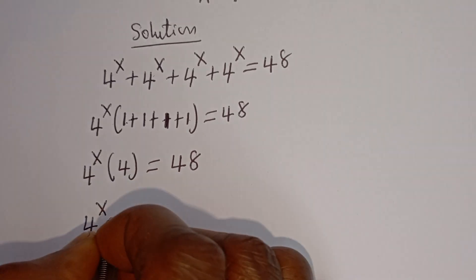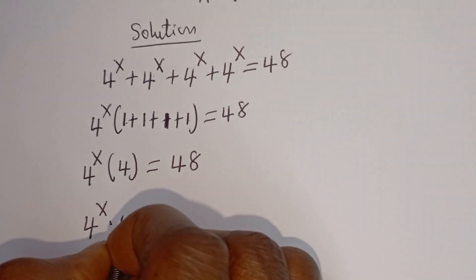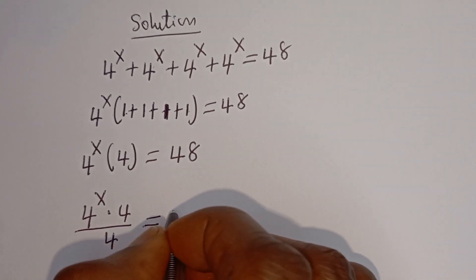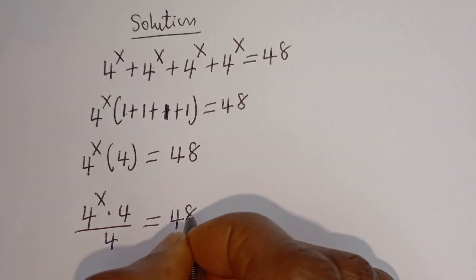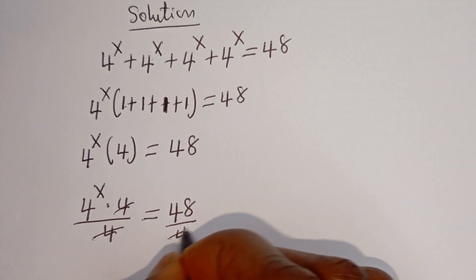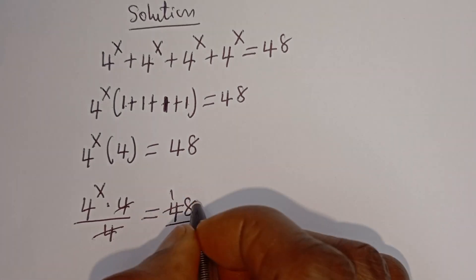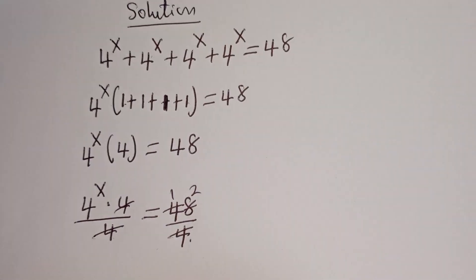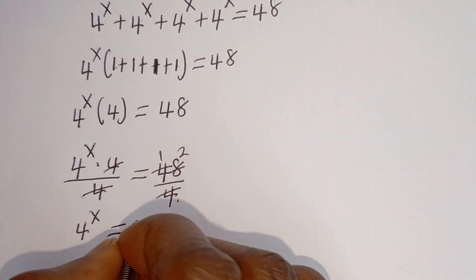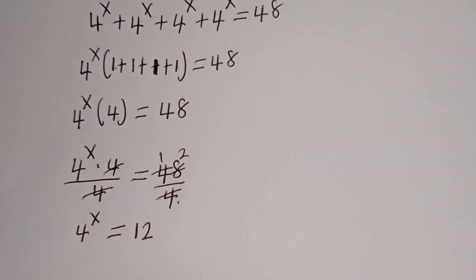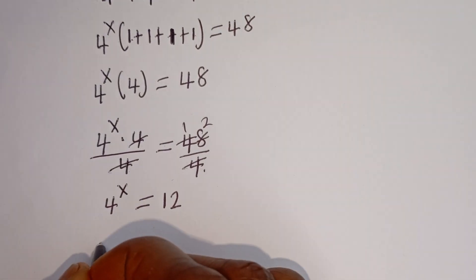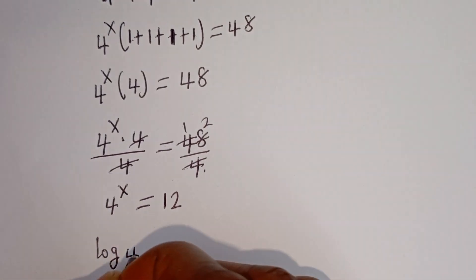Now let's divide both sides of this equation by 4. We have 4 to the power of S multiplied by 4 divided by 4 is equal to 48 divided by 4. The 4s cancel, therefore we have 4 to the power of S is equal to 12.